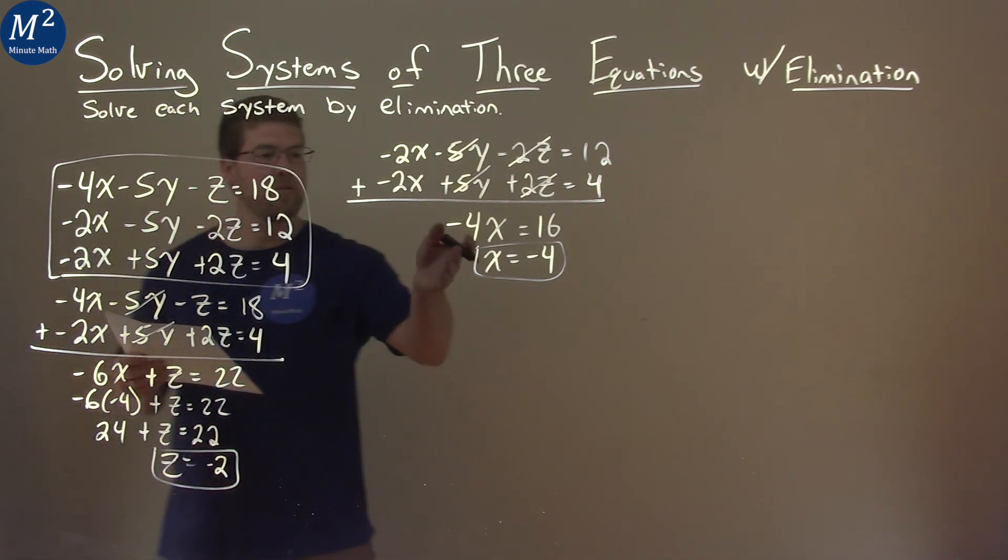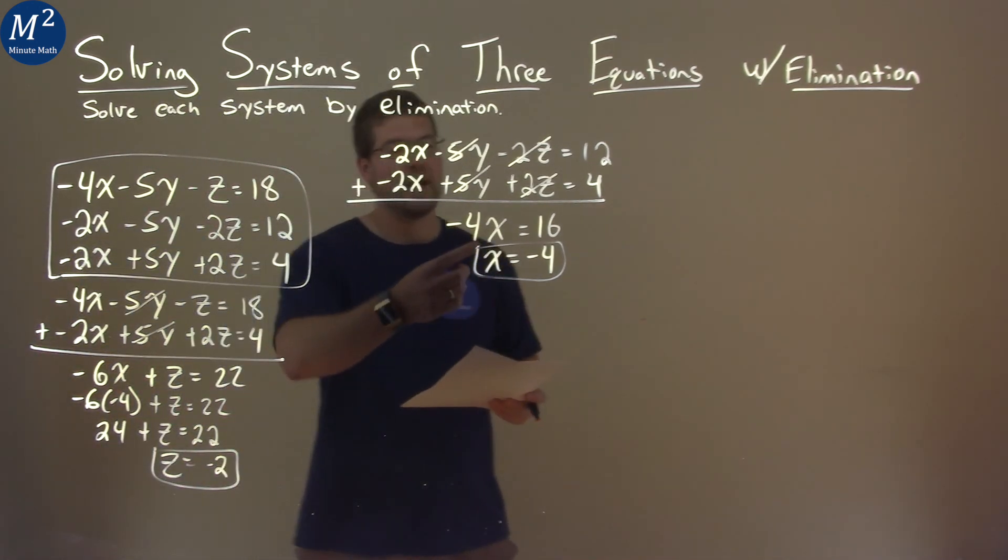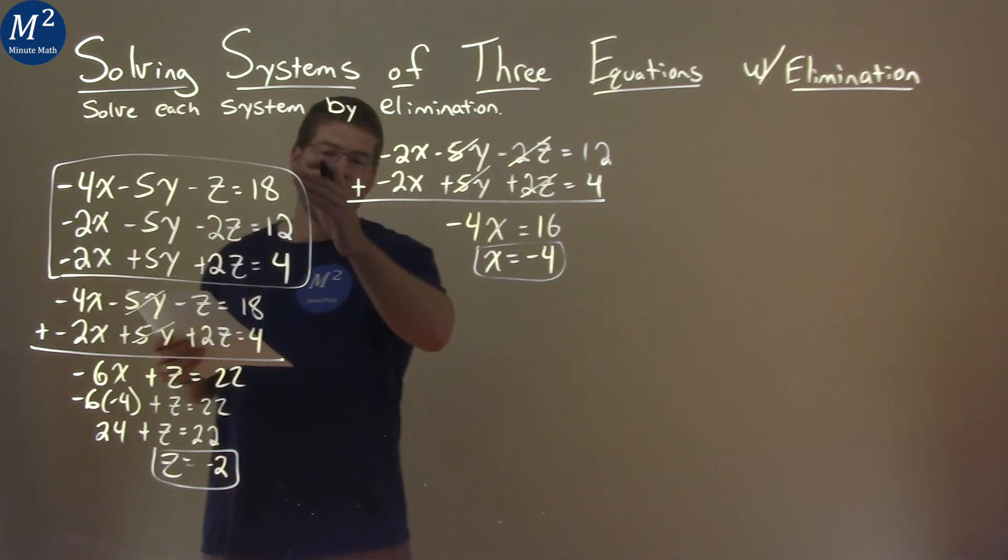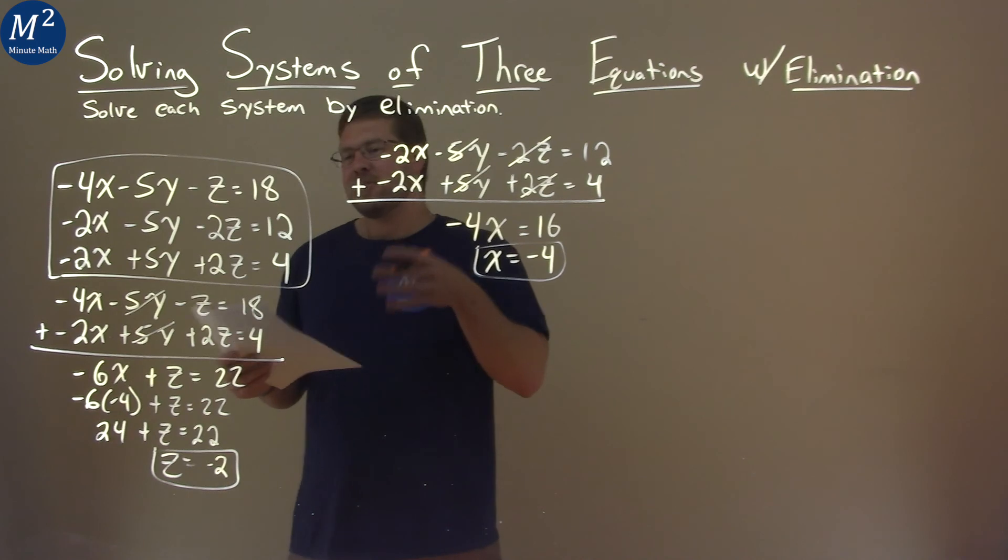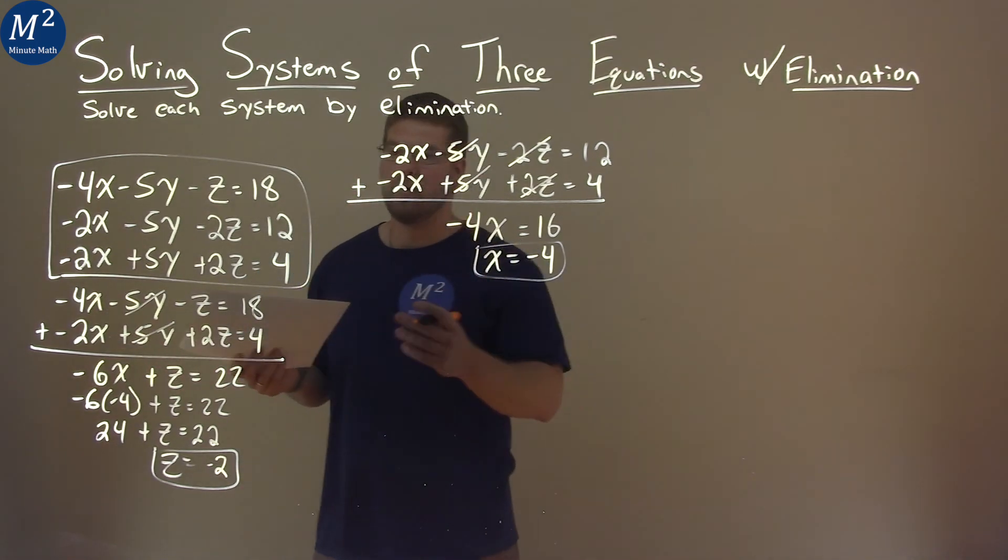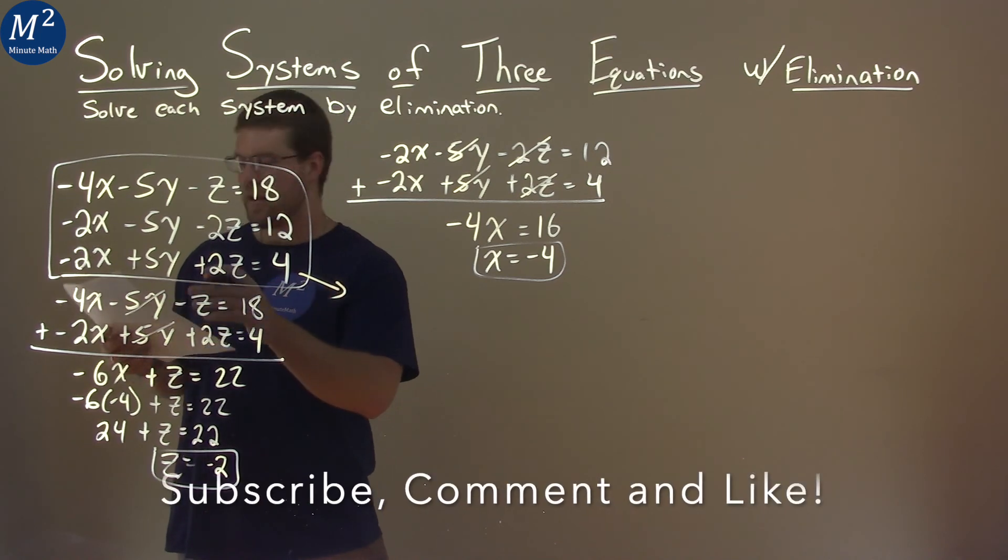So now we have two of our values, z is negative 2 and x is negative 4. We need to find the y. So we can pick any equation that we want here. I'm trying to find one that might be easier, but we're going to plug in the z and the x value to get y. So let's deal with this last equation right here.